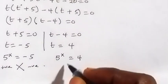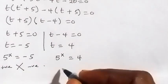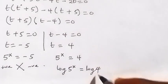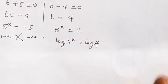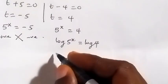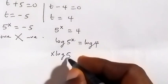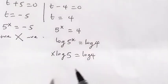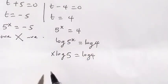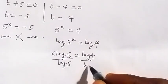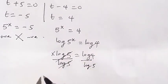To find the value of x from 5 raised to power x equals 4, we take the log on both sides: log of 5 raised to power x equals log 4. From the law of logarithms, we bring x to the front, giving x times log 5 equals log 4. Dividing both sides by log 5, log 5 cancels and we have x equals log 4 over log 5.